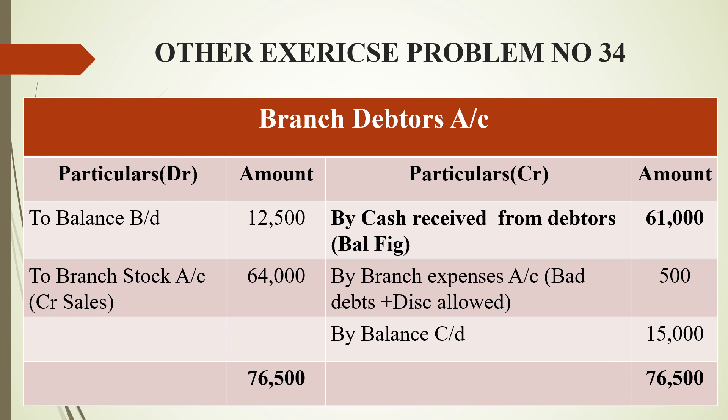For the branch debtors account: opening debtors is a debit balance, so debit side is 12,500. Credit sales: 64,000, also on debit side. On the credit side: bad debts and discount allowed are 500 rupees. Cash received from debtors has already been received by the branch, so it's on the credit side. The closing balance is 15,000. The debit side total gives a balancing figure of 61,000 rupees as cash received from debtors. Grand total on both sides: 76,500 rupees.